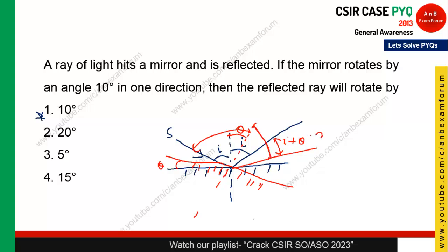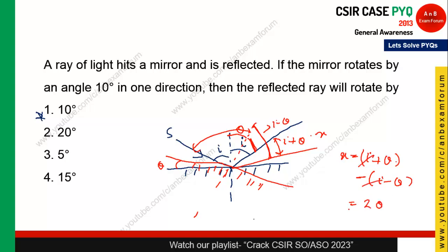We need to find x. The total angle on one side is I plus theta. The angle on the other side of the original position will be I minus theta, since this is I and this is theta. So subtracting I minus theta from I plus theta: the I cancels, leaving theta plus theta, which equals 2 theta. So the reflected ray is rotated by twice the mirror rotation: 2 × 10 = 20 degrees.